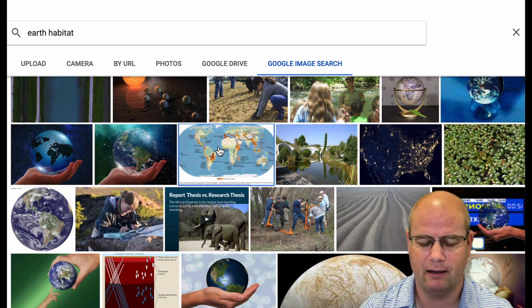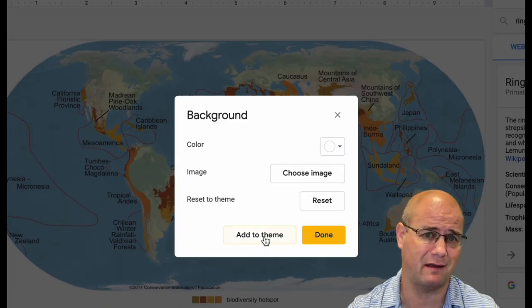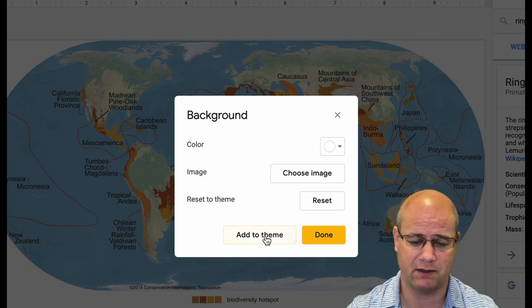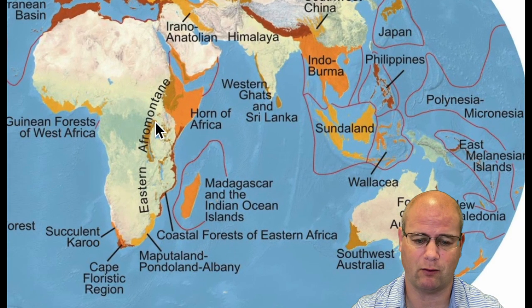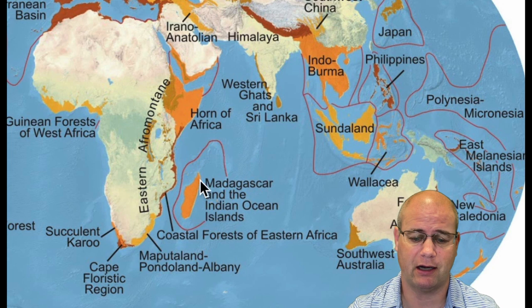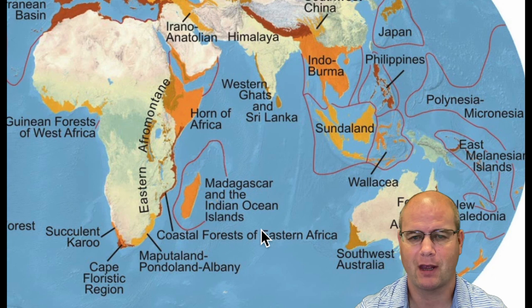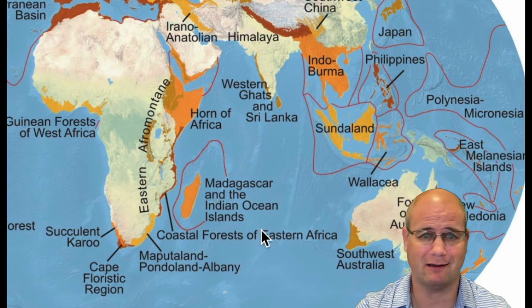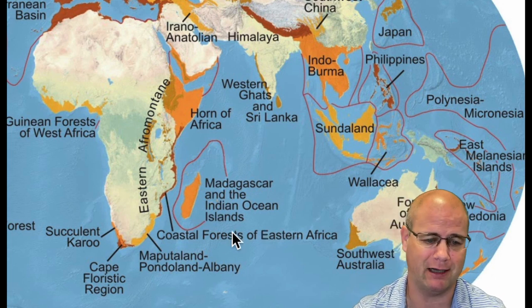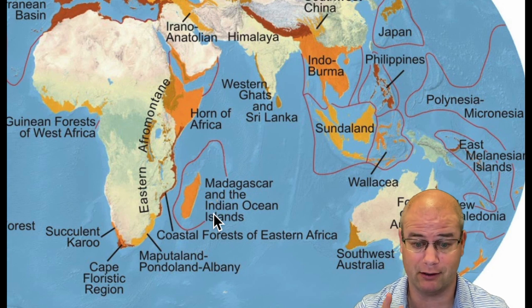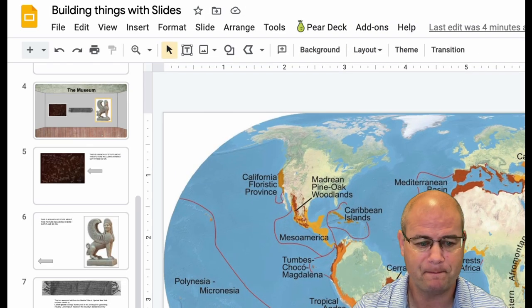I'll click that and insert it. One thing you don't want to do is add it to the theme, because you only want it to be the background on this particular page — so I'm just going to hit Done. Now on this page, I want students to be able to find an area, like Madagascar and the Indian Ocean islands. What I'm going to do is use something called an image map. This is basically how the internet went from boring gopher stuff, if you know what that means, to the awesome image-driven GUI interface we have now.